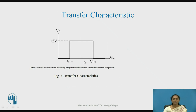In the transfer characteristics, the x-axis represents the input signal and the y-axis represents the output signal. When output voltage is within the range, output is at plus 5 volt, giving a logic high signal. For other cases, it will show logic 0. This is the transfer characteristics for the window detector circuit when a transistor is connected at the output.